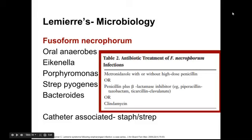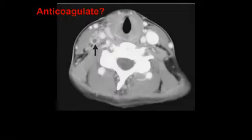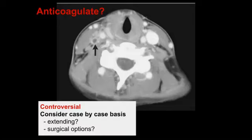To treat Lemierre's disease, use either Flagyl or clindamycin to cover for the anaerobes, or you can do a penicillin plus beta-lactamase inhibitor. If it is catheter-associated, make sure you add vancomycin to cover for staph and strep. As for anticoagulating the clot — that's pretty controversial. The recommendations basically say consider it on a case-by-case basis, think about how far the clot is extending, and whether the patient is going for surgical debridement anyway.